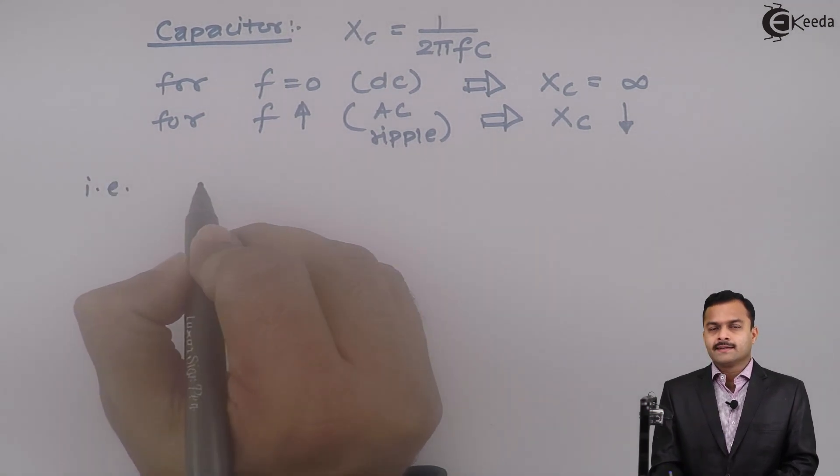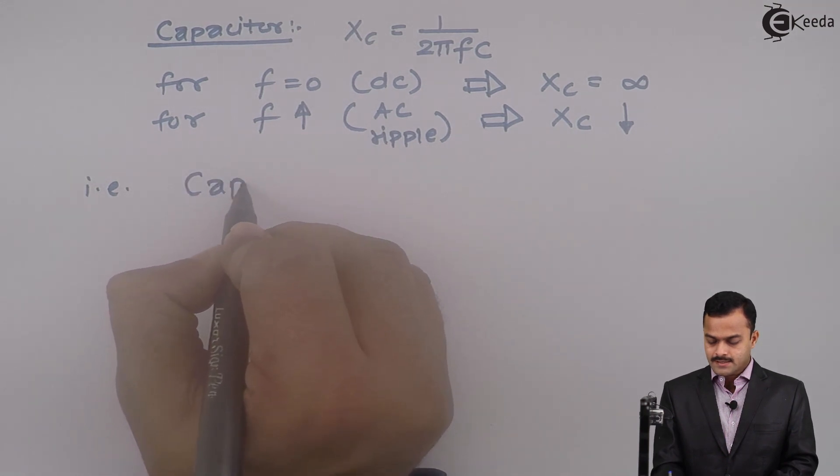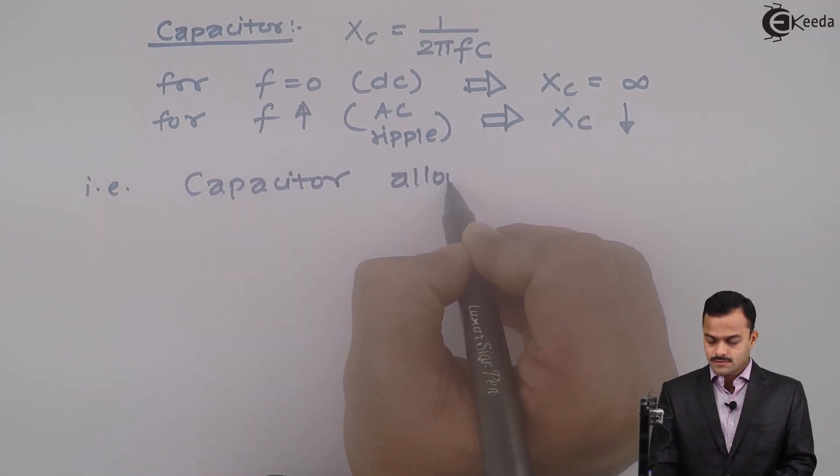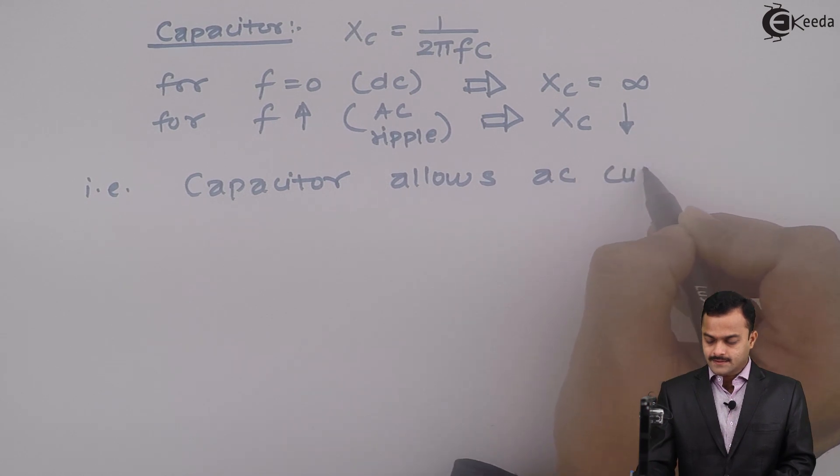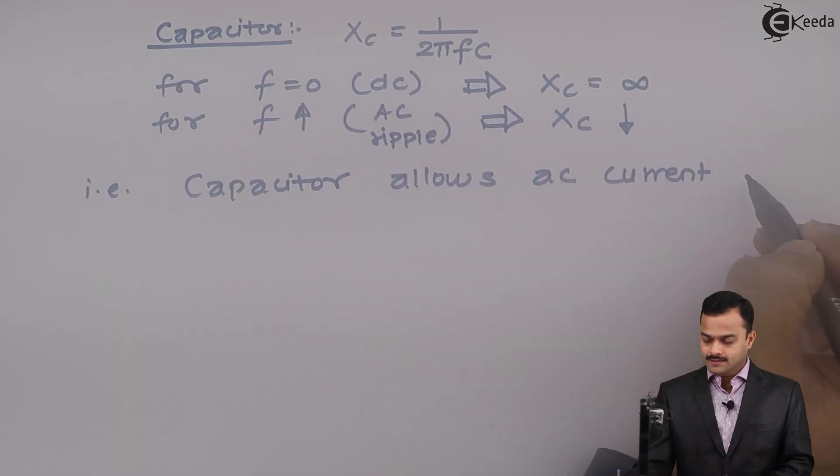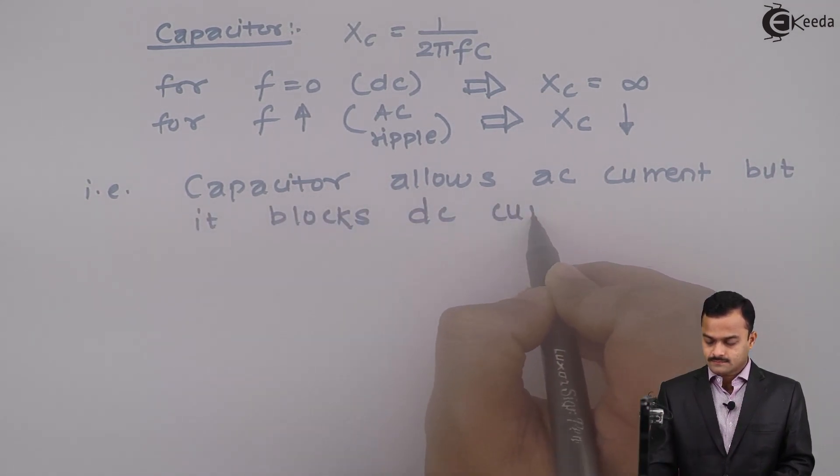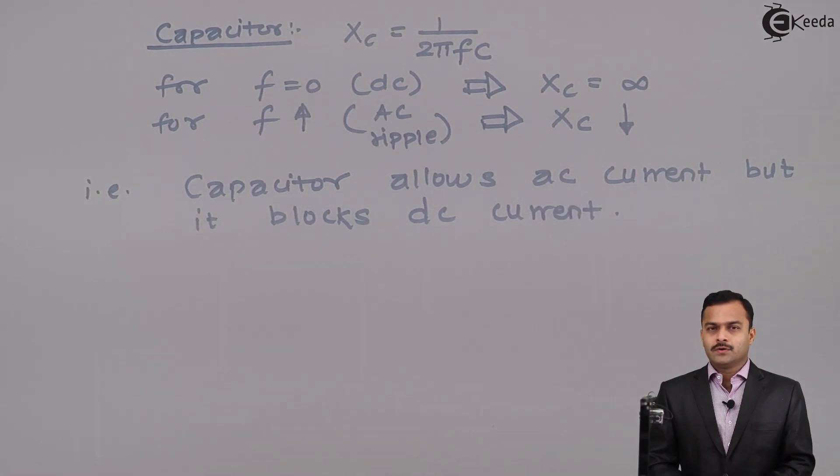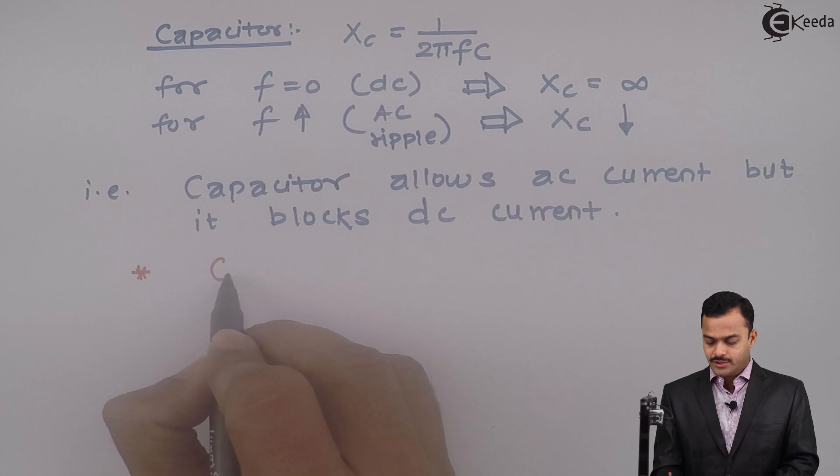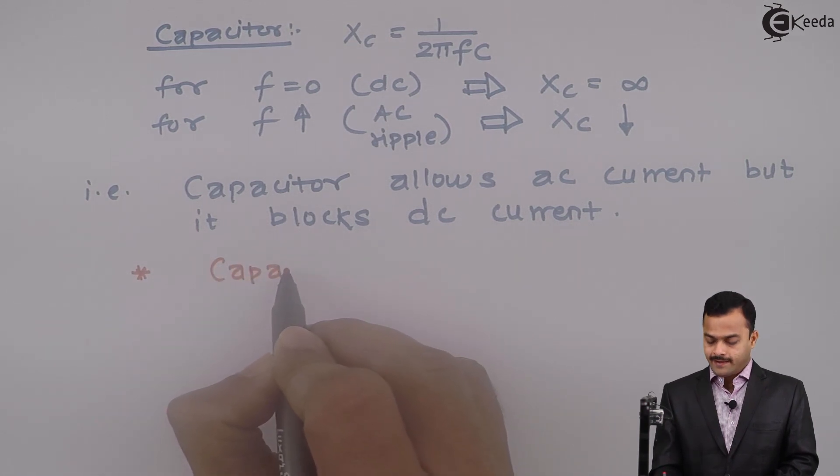What I can say it gives me a conclusion that capacitor allows AC current or you can say ripple current but it blocks DC current. Remember, our output is having both AC and DC. What we want DC should pass to the load removing AC. Either you can block in series or you can allow passing through a parallel path. Now, that means if you are using filter as a capacitor filter, make sure that capacitor is connected across load.